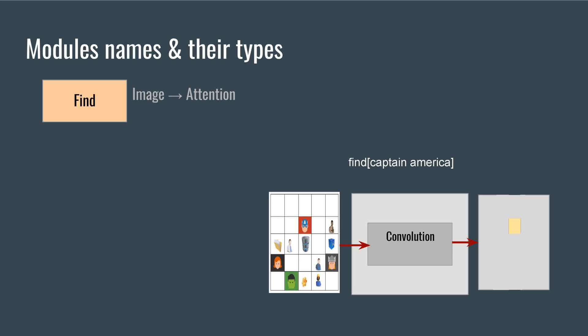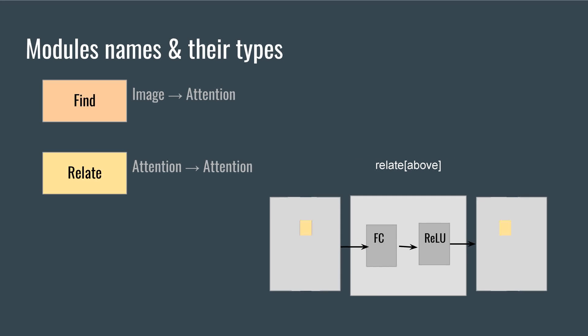For example, the output of module find Captain America is a matrix whose entries are large in the region of the image containing Captain America and small everywhere else. The relate module directs focus from one region of input to another. This module takes an attention and shifts the region of greatest activation accordingly. From this module we can know whether Captain America is above or left or right to the Avengers tower.